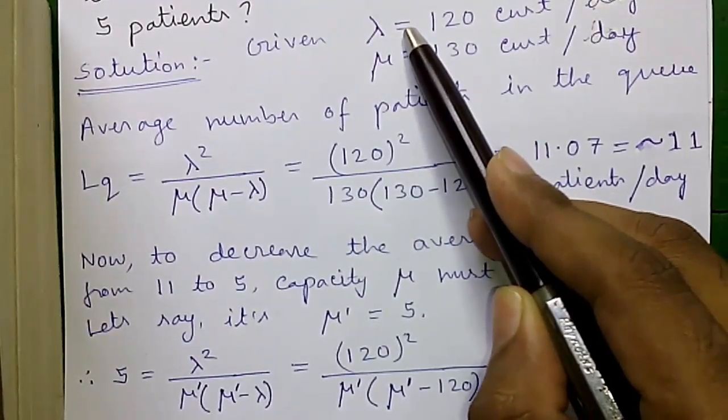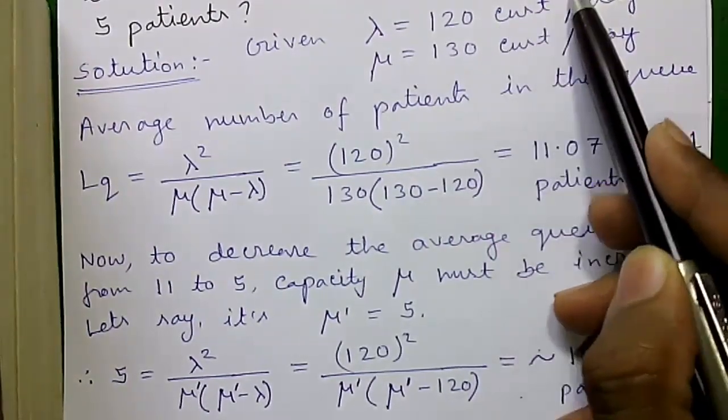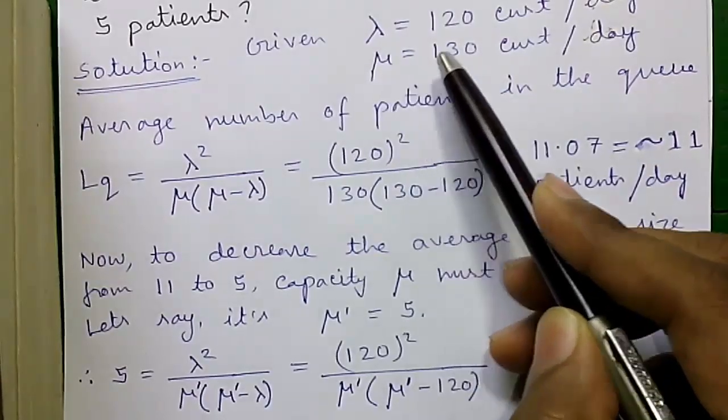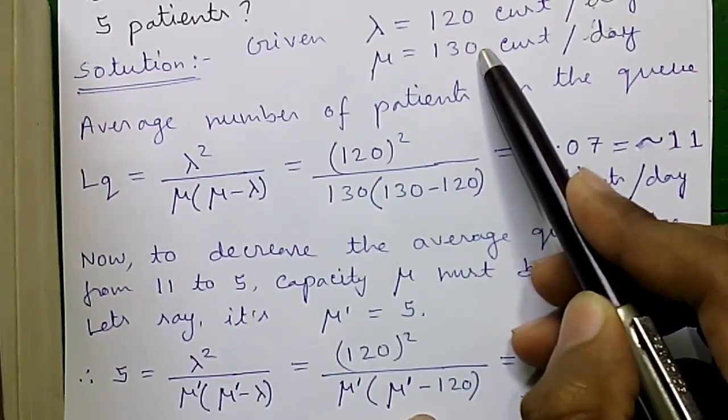So let's proceed to the solution. Given lambda or average rate of arrival of customers is 120 customers per day, and mu or average handling capacity of clinic is 130 customers per day.